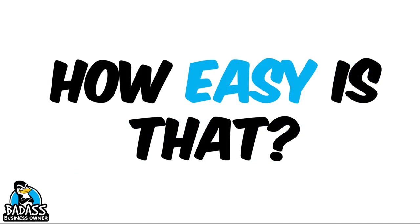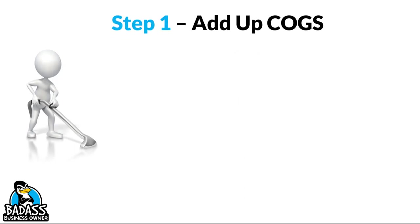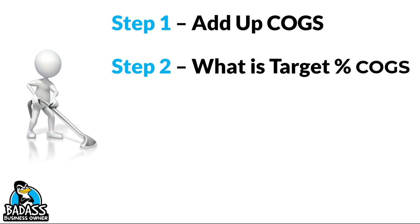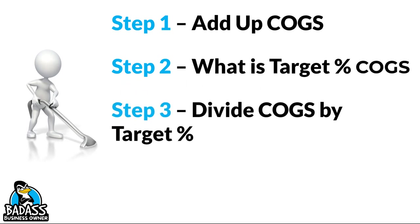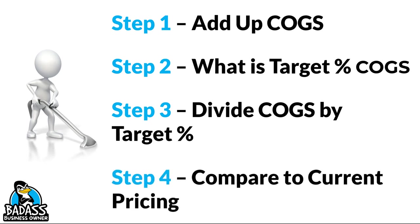How easy is that? Let's review the steps one more time. Step one: add up all your cost of goods. Step two: identify your target cost of goods percentage. Step three: divide cost of goods by that target percentage — and that gives you your price. Compare it to your current pricing. Is it on target? Is it lower? Is it higher? That tells you whether you're going to hit your profit goal.